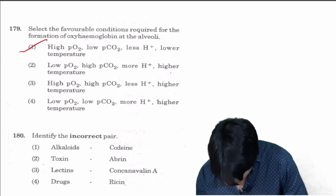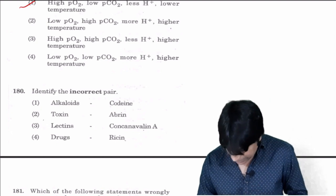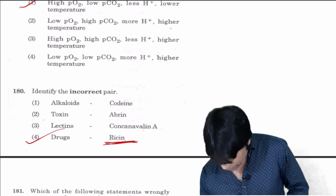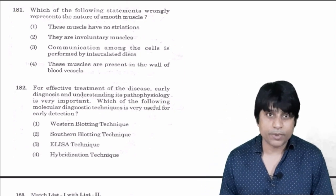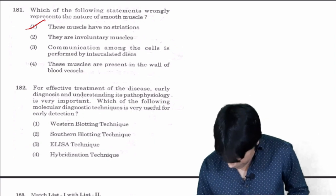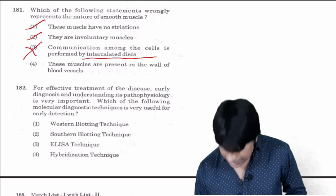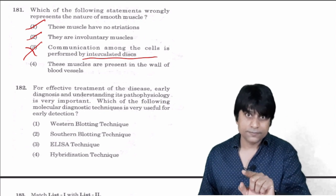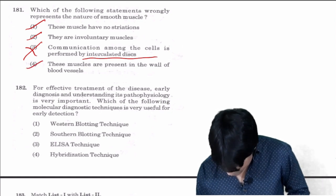Alkaloids are codeine, toxins are abrin and ricin, lectins are concanavalin A, drugs are vinblastine and vincristine, but ricin is toxin, so incorrect one is the fourth option. Which of the following statements wrongly represent the nature of smooth muscles? Smooth muscles are present in the walls of alimentary canal or urinary bladder. These muscles have no striations, correct. They are involuntary muscles, correct. Communication among the cells performed by intercalated discs - intercalated discs are the characters of cardiac muscles.